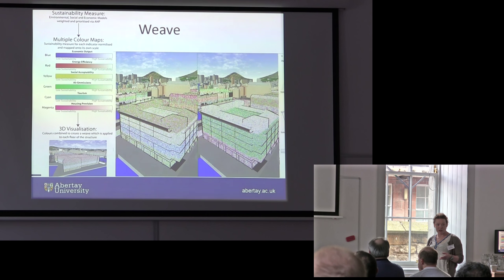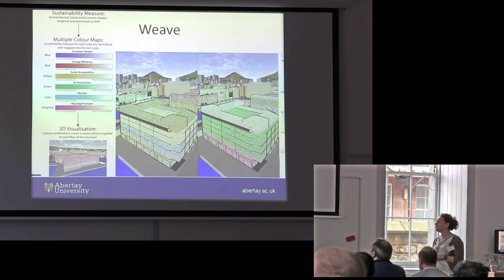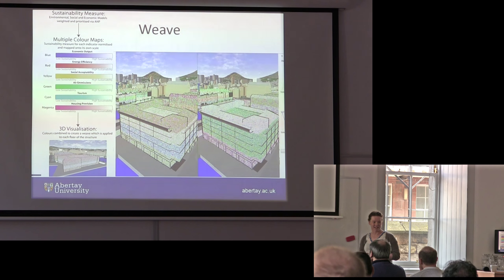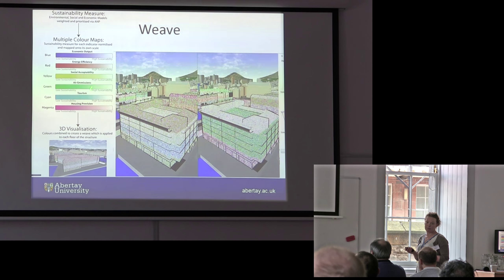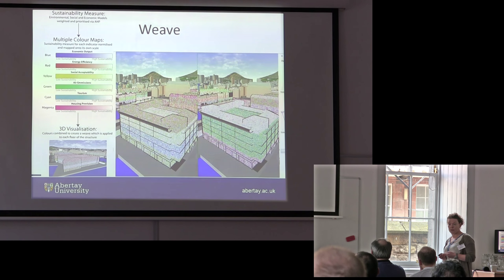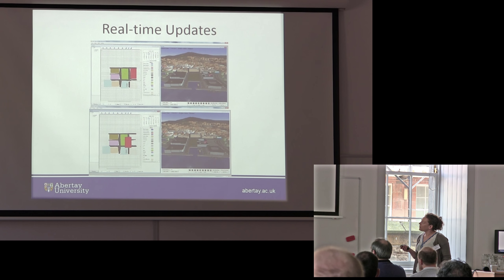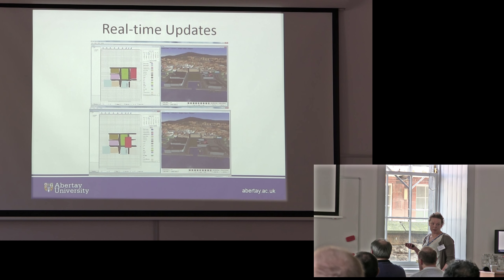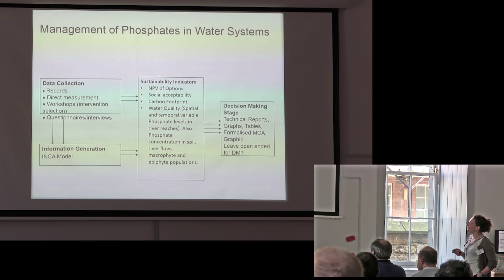We tested these visualisation techniques with a range of stakeholders — city engineers, road planners, and community groups — to identify which methods were useful. Most people initially disliked the detailed indicator view because it's quite complex and takes time to digest. But town planners liked it because it preserved all the sustainability information, allowing them to immediately identify which indicator was responsible for one scenario being relatively better than another. The sustainability measures update in real time when buildings are moved or attributes changed.